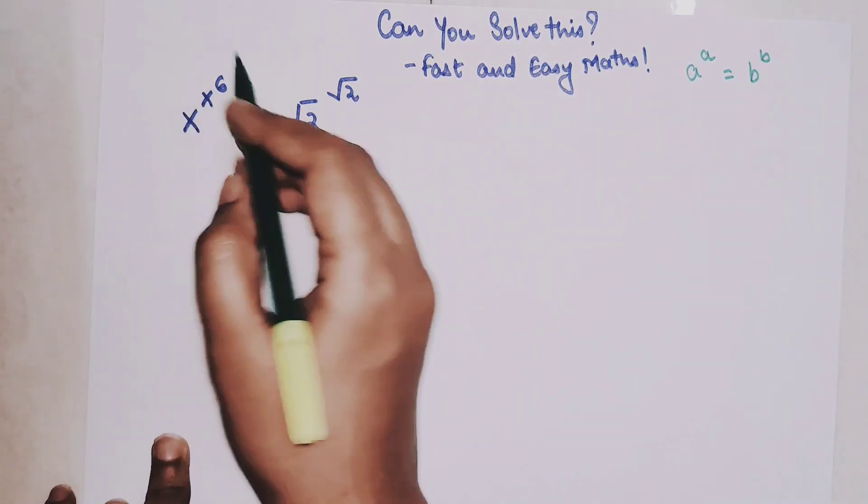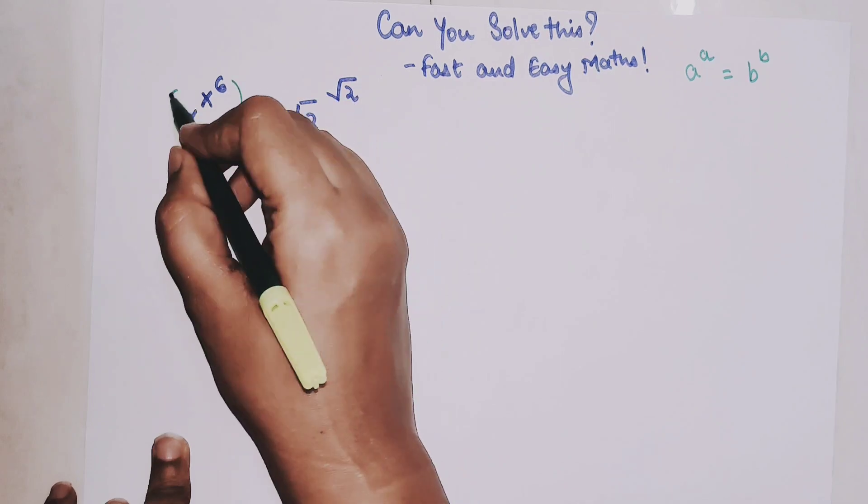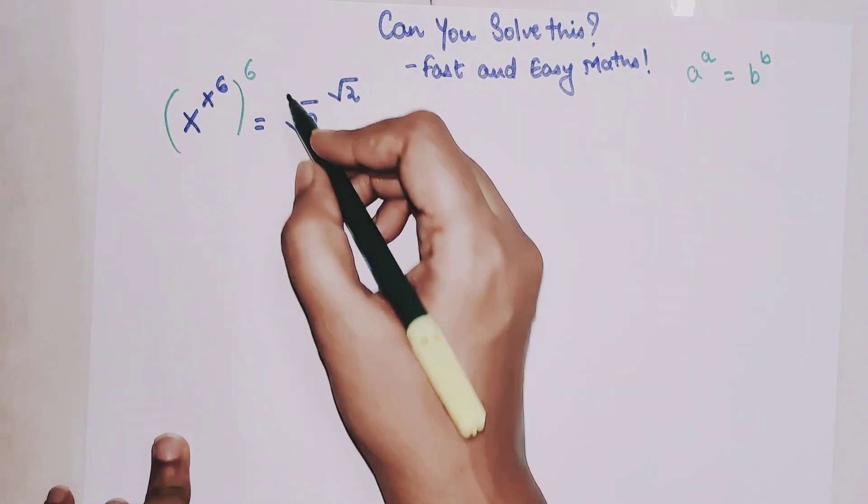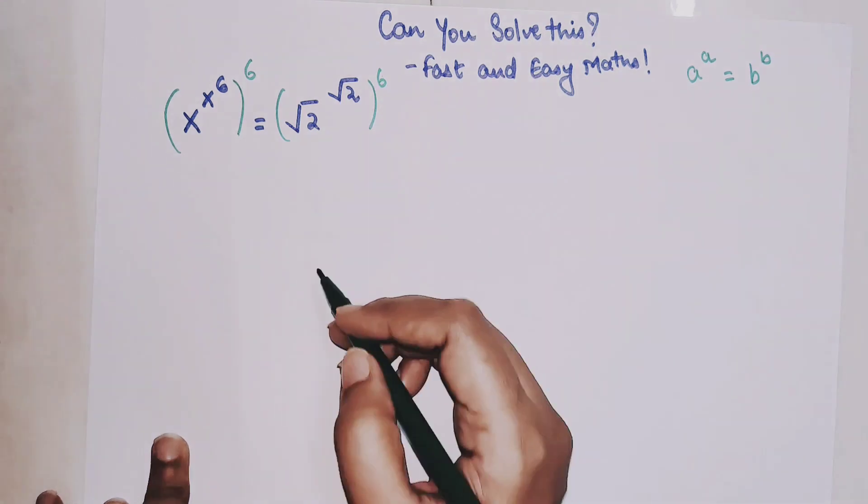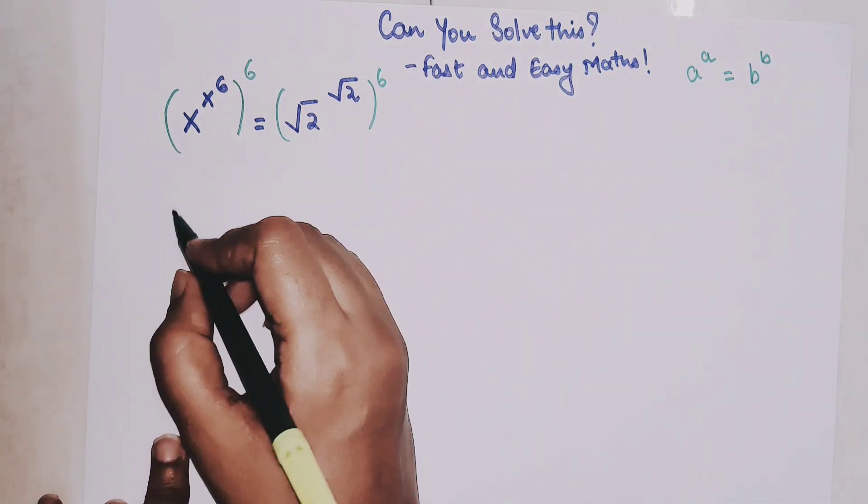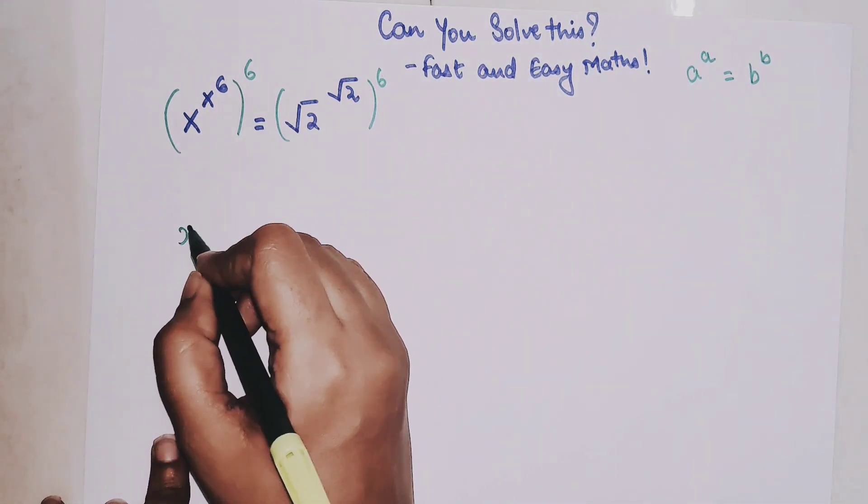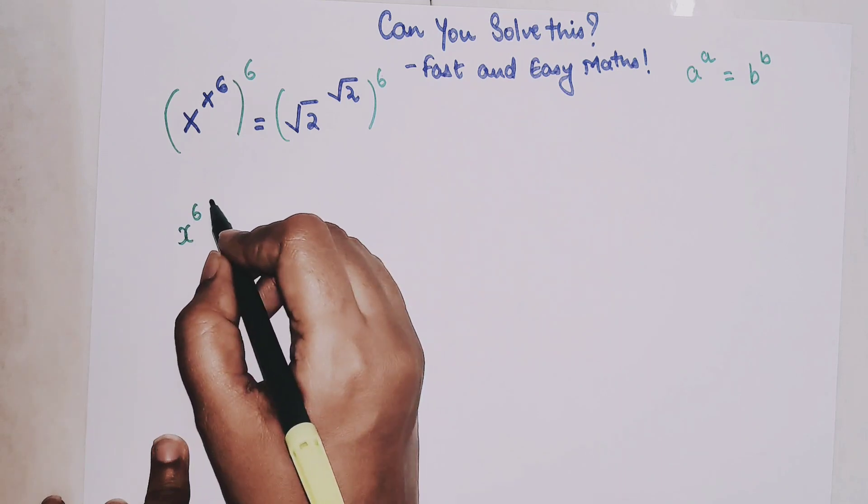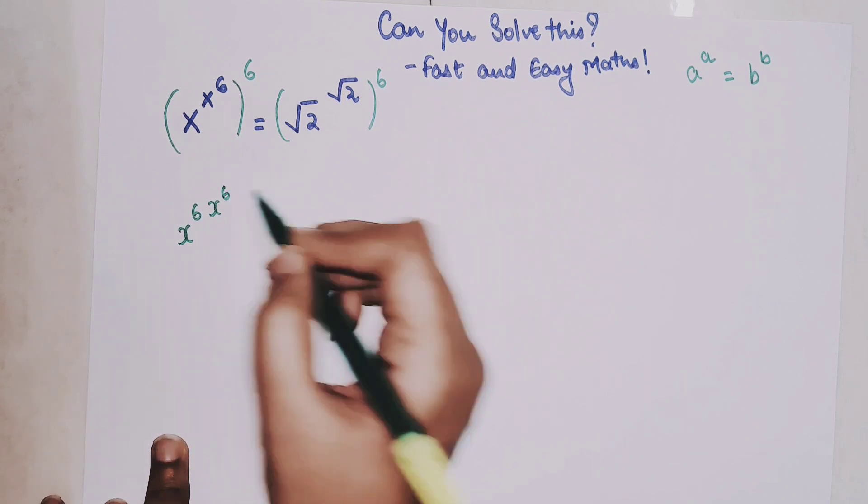So what we do is we will take the 6th power of our LHS as well as RHS. So now I can write this as nothing but x raised to 6 into x raised to 6.